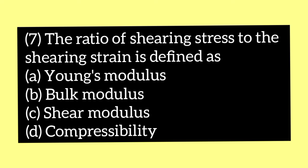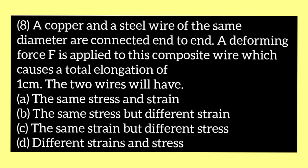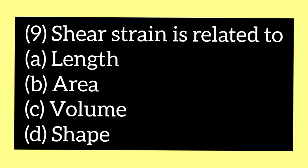Coming to the next question: a copper and a steel wire of the same diameter are connected end to end. A deforming force F is applied to this composite wire which causes an elongation of one centimeter. The two wires will have — option A the same stress and strain, option B the same stress but different strain, option C the same strain but different stress, option D different strains and stress. The answer is option B, the same stress but different strain.